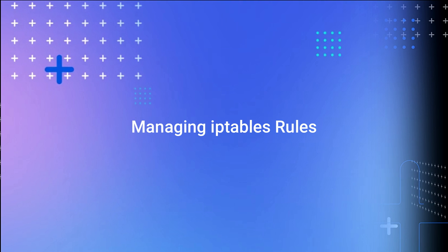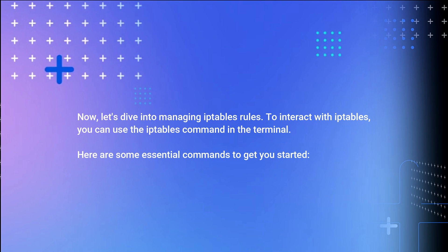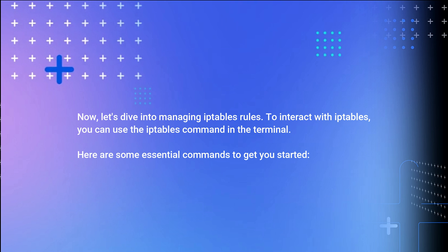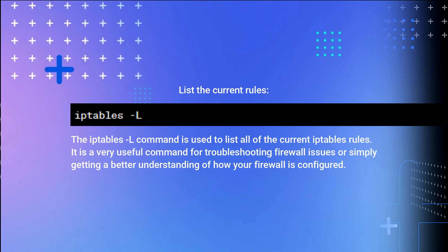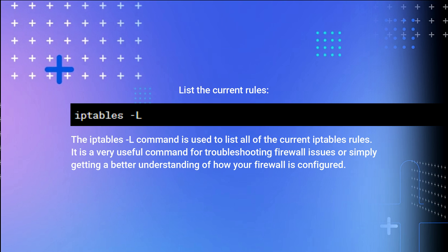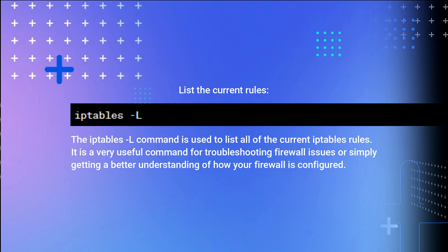Managing IP Tables Rules. Now, let's dive into managing IP Tables rules. To interact with IP Tables, you can use the iptables command in the terminal. Here are some essential commands to get you started. List the current rules: the 'iptables -L' command is used to list all of the current IP Tables rules. It is very useful for troubleshooting firewall issues or getting a better understanding of how your firewall is configured.